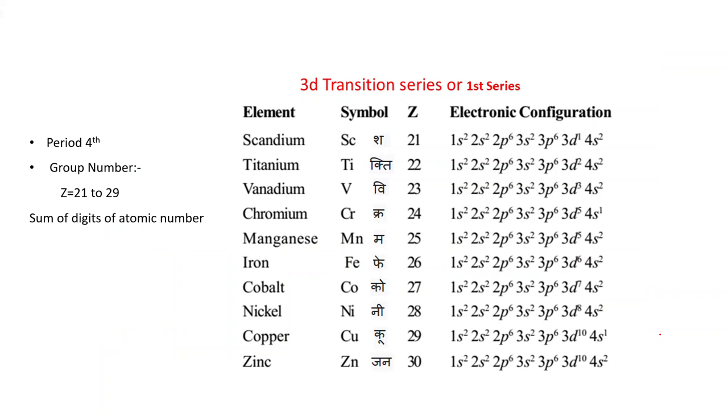In this class we will discuss in detail the 3D transition series or first series of the transition metals. That is why you must know the electronic configuration and you have to know the name and symbol of these elements along with their atomic number. Again, this belongs to the 4th period because the principal quantum number of last shell is 4. You can see from this electronic configuration.